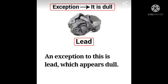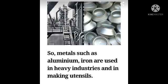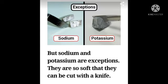But an exception is lead, which does not show the lustre property and appears dull in nature. The third physical property is that metals are hard and have high density. Metals such as aluminium and iron are used in heavy industries and in making utensils. But sodium and potassium are exceptions — they are so soft that they can be cut with a knife, even though they are also metals.